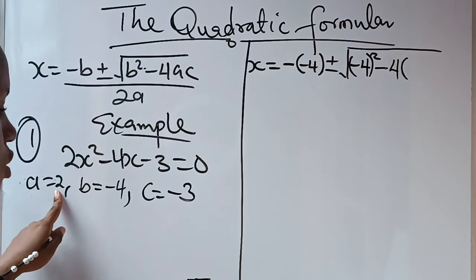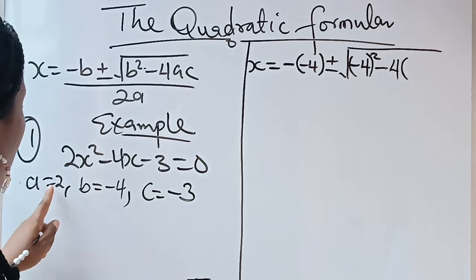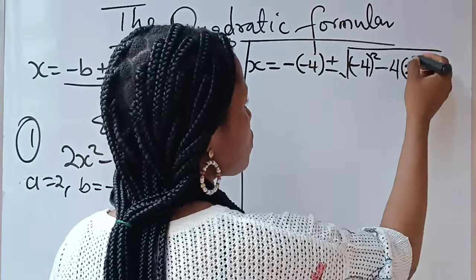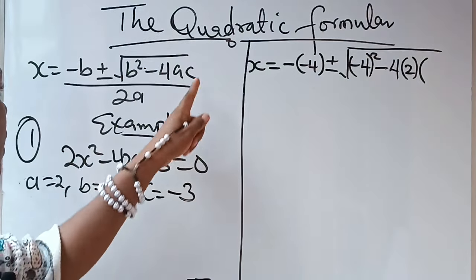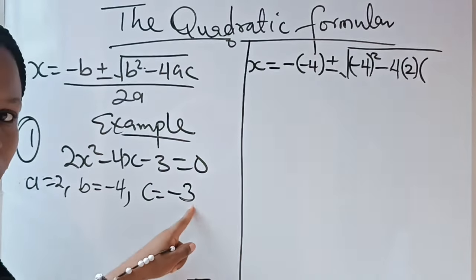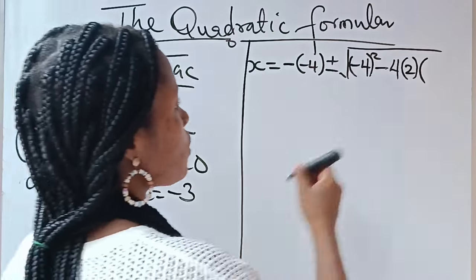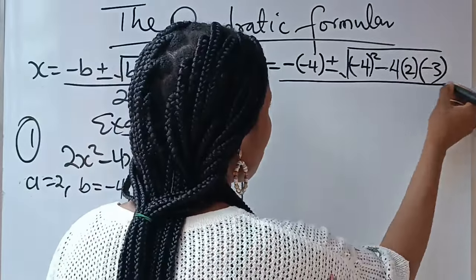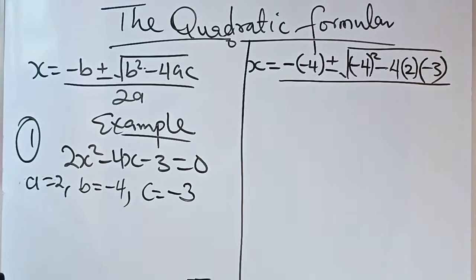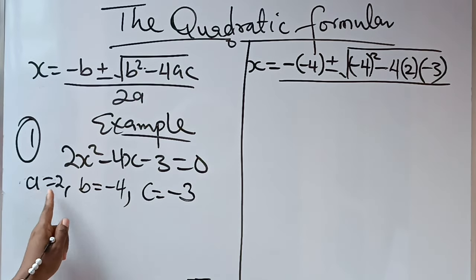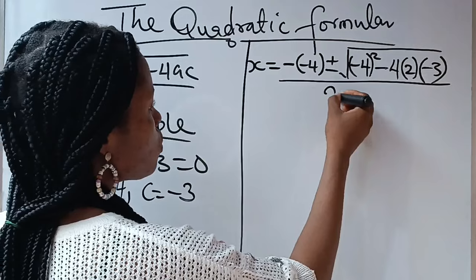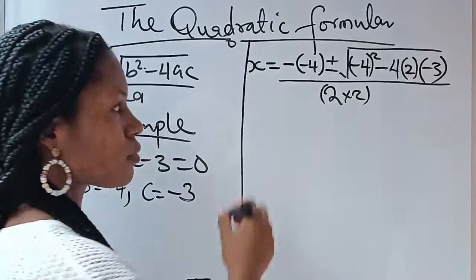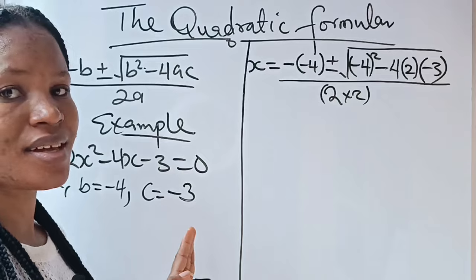-4 into, that is 4 times A times C. Now, what is our A? Our A is 2. Our A is 2, so we are going to write our 2. And our C is -3, so we are going to write our -3. Divided by 2A, that is 2 times our A is 2, so 2 × 2. That's that.